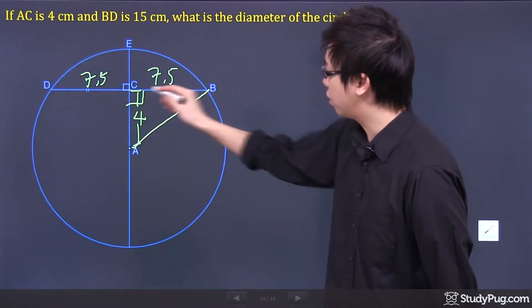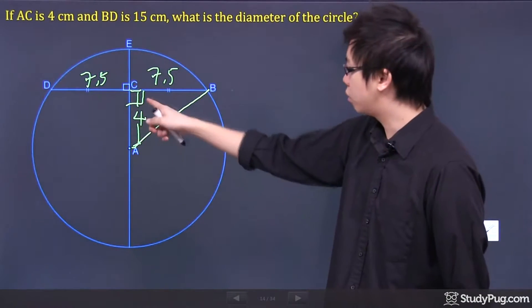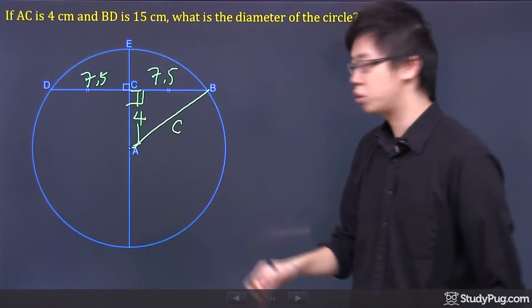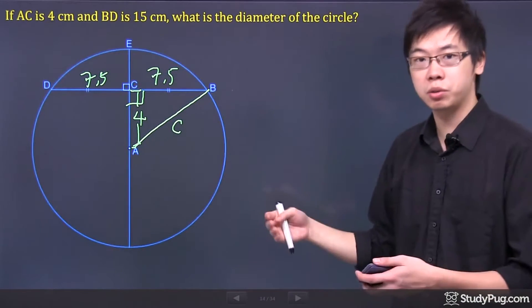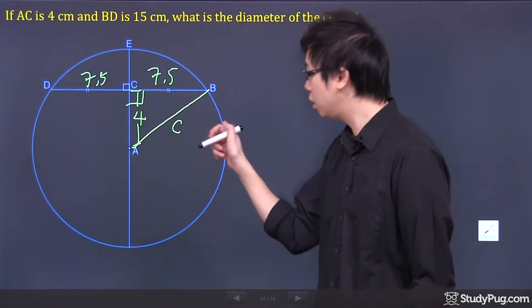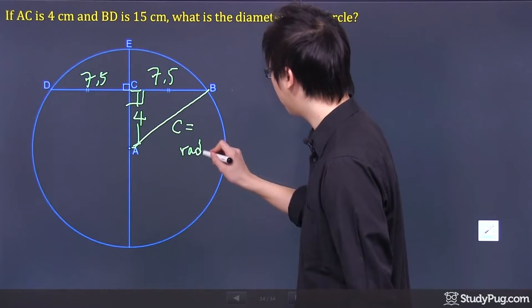So there's a right triangle right here. I know this side's a 4, this is my right 90 degrees, and I know this side's a 7.5. This is actually known as your C, which is the radius or the hypotenuse. Why are we looking for this? Because this is your radius.